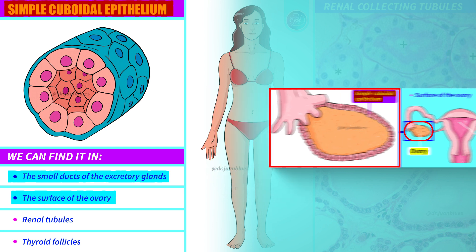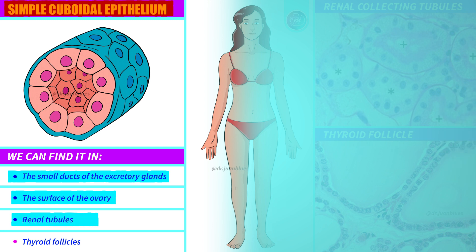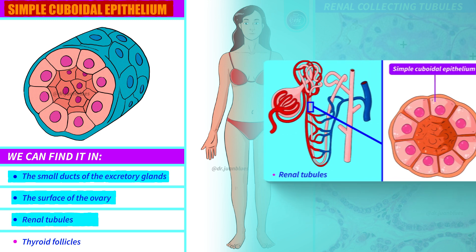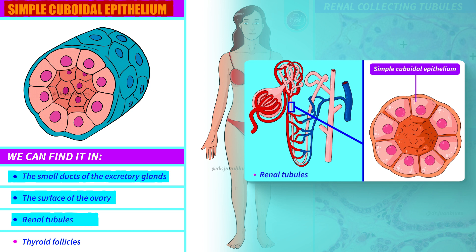We will also find cuboidal simple epithelia in the renal tubules. In the nephron, specifically in the part of the tubules, we have a layer of cuboidal epithelial cells. Bear in mind that in this area, ions are absorbed and secreted to make urine, and it's useful to have just a single layer of cells so that substances can pass through easily.